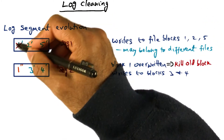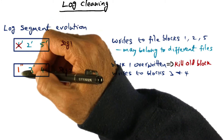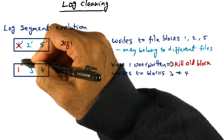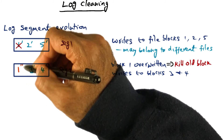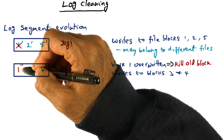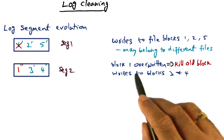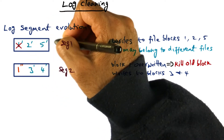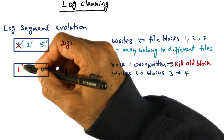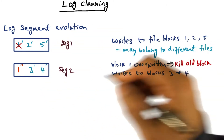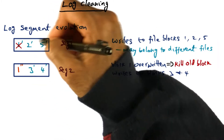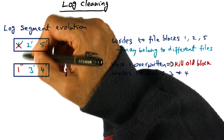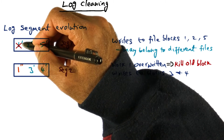A particular block one may get overwritten due to activity on the client. Now we have new content for that same file block: one double prime. Once this new content has been created, the old copy is no longer valid. Block one is overwritten, which means we have to kill the old block that was in the original segment. There is a new segment in which we wrote the contents of the new file block one double prime, and we have to go back to the old segment and kill that stale copy.